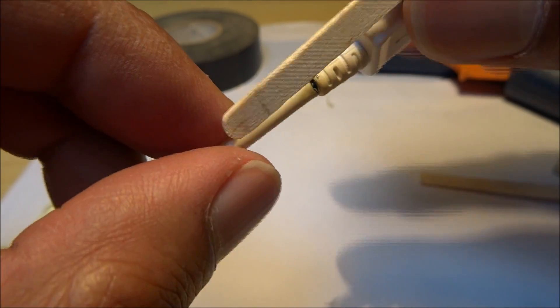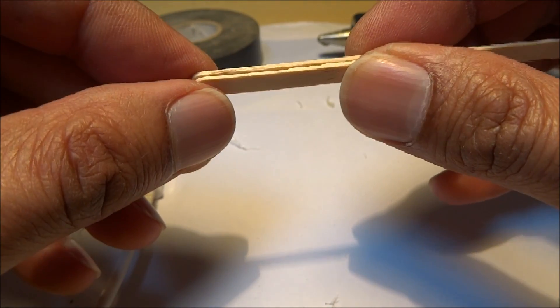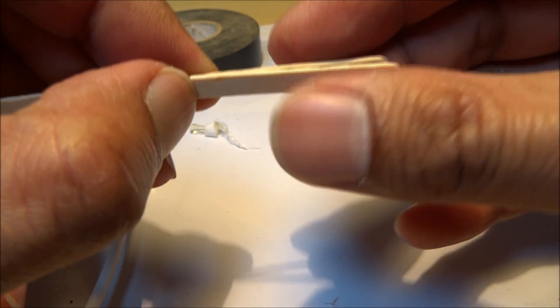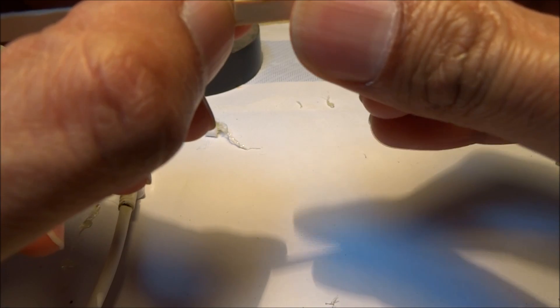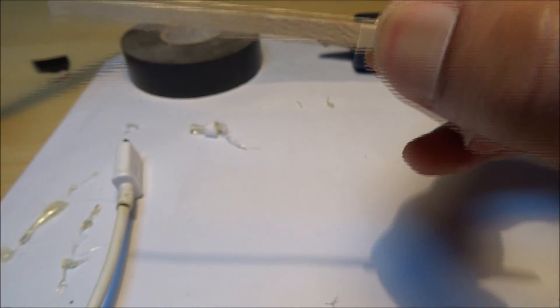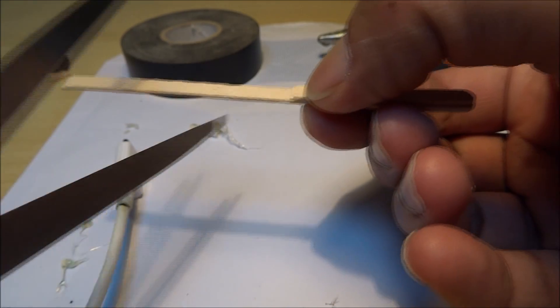That should stop it from snapping any further. For the other end of this, you get a similar sort of size. Generally I'd suggest using tape that's the same color as the wire. I don't have white tape to hand, so I'm just going to use what I've got.